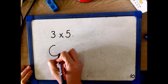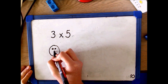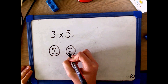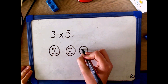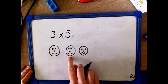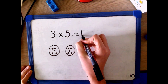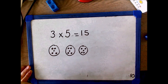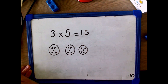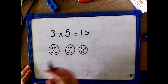It is important in multiplication that children understand they are making equal groups. Here I am drawing out the counters to represent 3 groups of 5, or 3 times 5. I have to make sure there is the same in each group. Children understand multiplication as also being the same as repeated addition: 5 add 5 add 5.